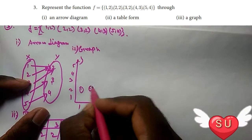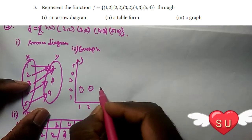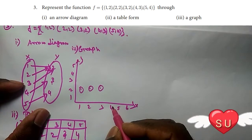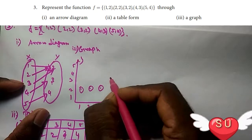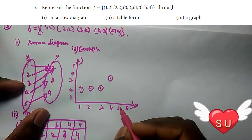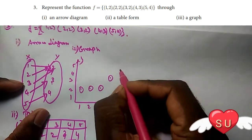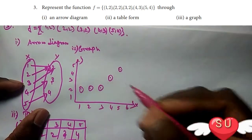Now plotting the points: (1,2), (2,2), (3,2), (4,3), (5,4). This is the answer.